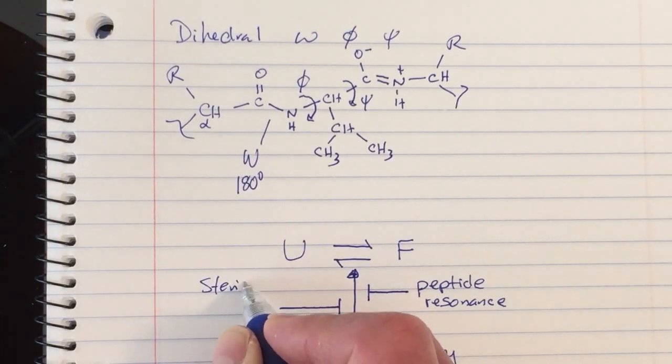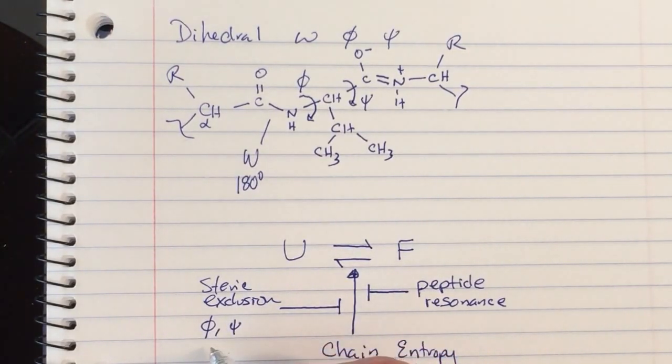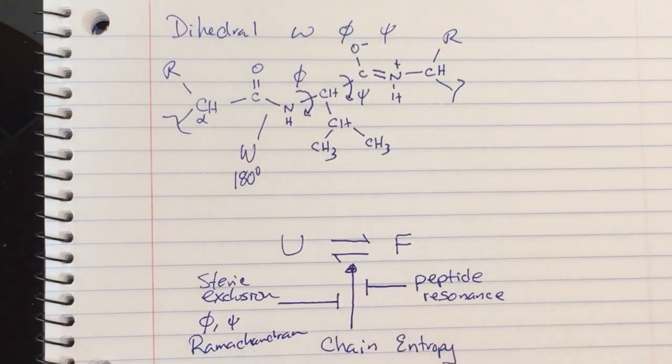The other thing that mitigates chain entropy is this idea of steric exclusion, such that Phi and Psi only adopt certain combinations as illustrated by the Ramachandran plot.